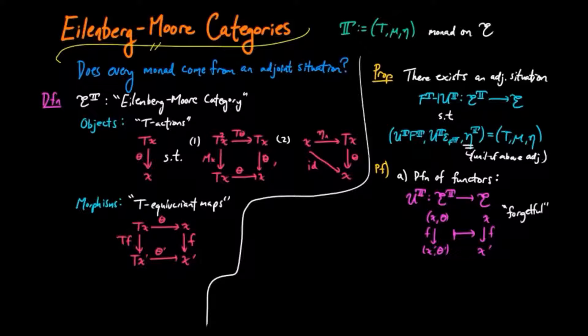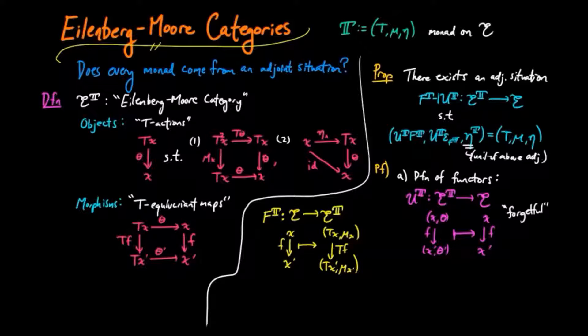The free functor F^t takes e to the Eilenberg-Moore category e^t. It takes a morphism x to x' in e to a t-equivariant map where the action is given by multiplication. So we have x going to (tx, mu_x) and x' going to (tx', mu_{x'}), and the morphism f going to tf.